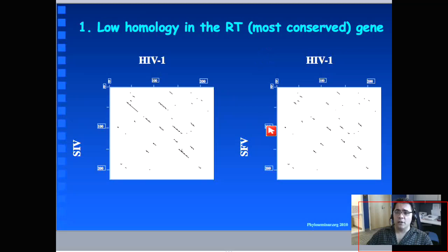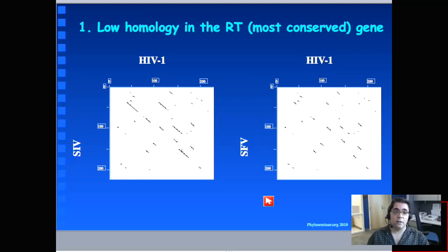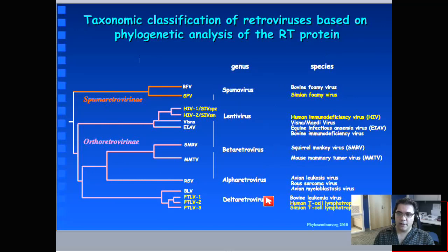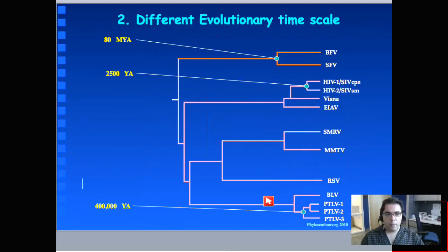But when you start comparing something like HIV-1 and the simian foamy virus — comparing two retroviruses from two different subfamilies using the RT gene, which is the most conserved gene — you basically see that there is almost no significant similarity. This already tells us that obtaining a reliable general tree is not easy because of the low homology when comparing retroviruses belonging to really different families and subfamilies.